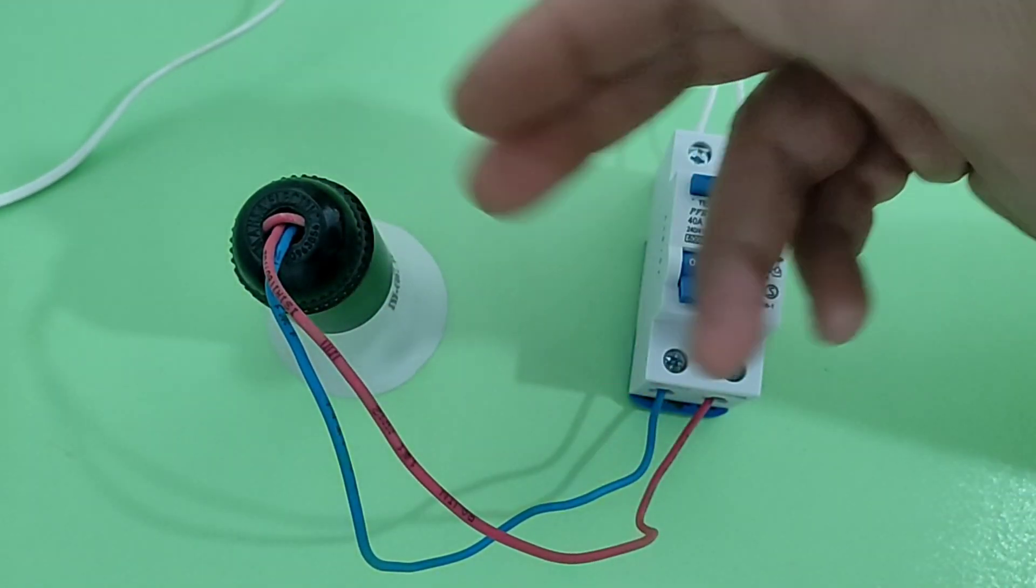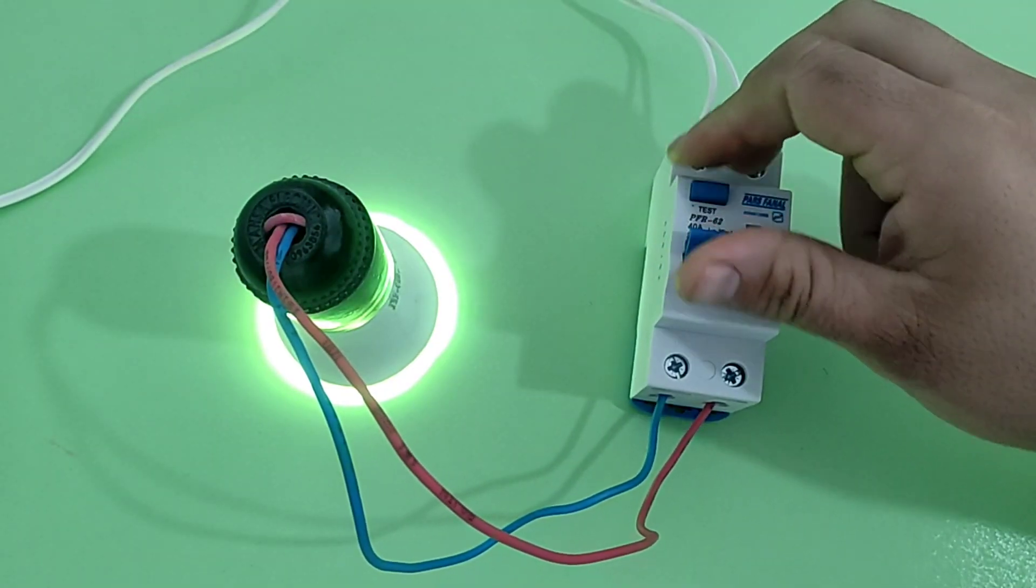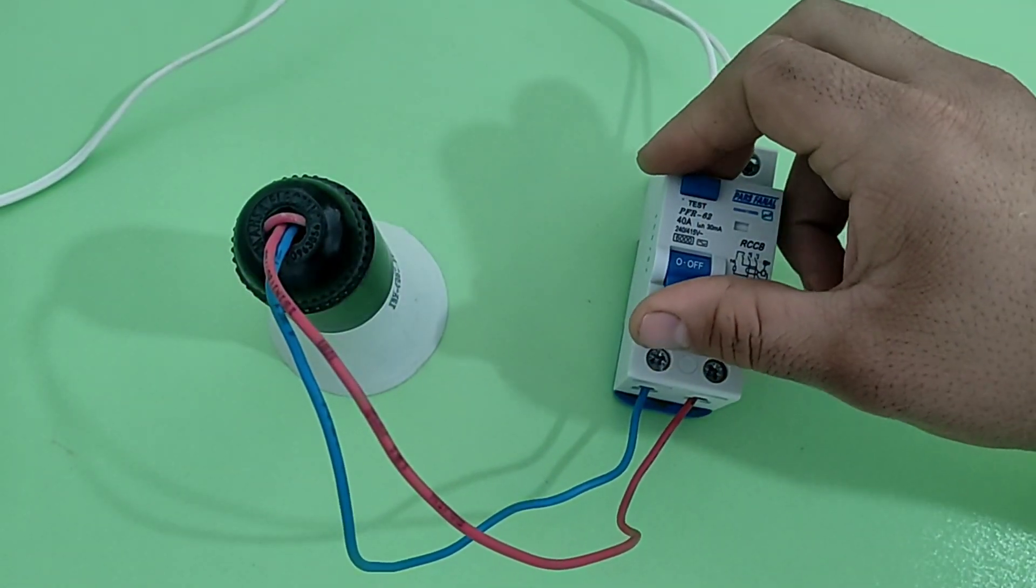First of all, we have connected the RCCB switch to the electricity and using it, we turn on a lamp.